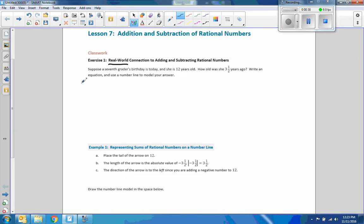Now that you have had time to do this, let's go over it. Suppose a seventh grader's birthday is today. She's 12 years old. How old was she three and a half years ago? Write an equation and use a number line to model your answer. So, she is now 12, and we're going to add a negative three and one-and-a-half years. And she's going to be eight and a half years.